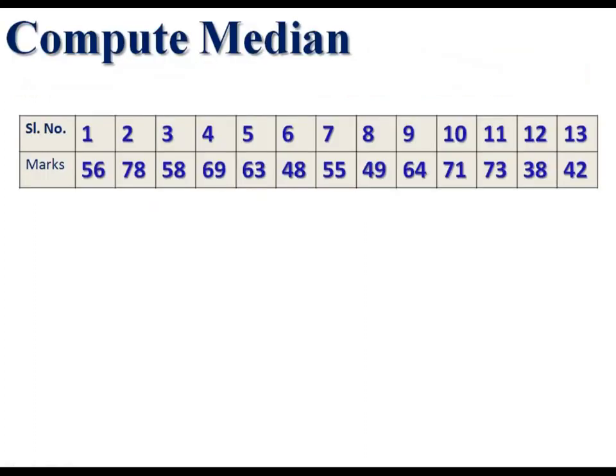Example: Compute median. We are given first row as serial number, which is not important. Then marks, which is the value. Second row: marks and value, 13 items.